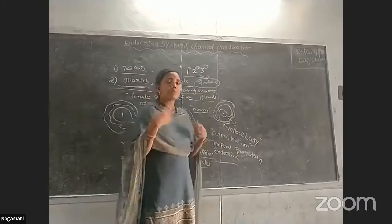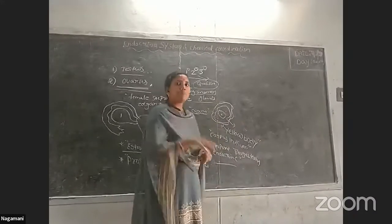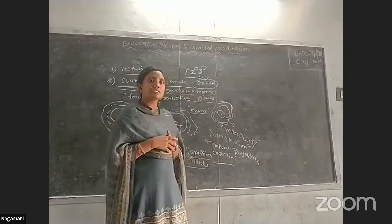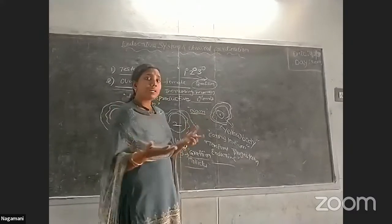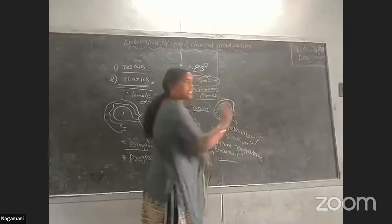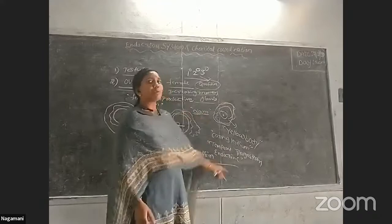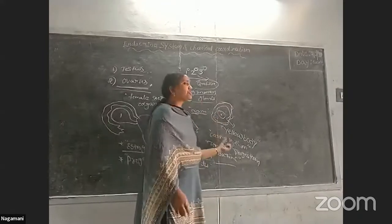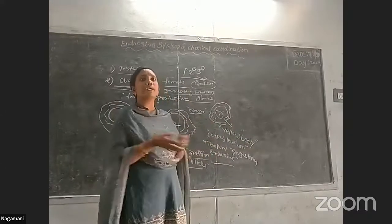If the ovum does not meet the sperm and an embryo is not formed, the corpus luteum decreases and forms the corpus albicans, because there is no use for progesterone and the uterus is not prepared for pregnancy.